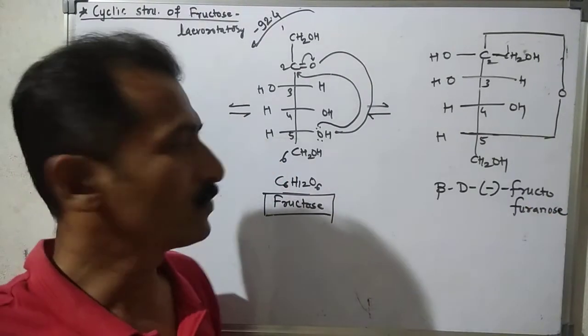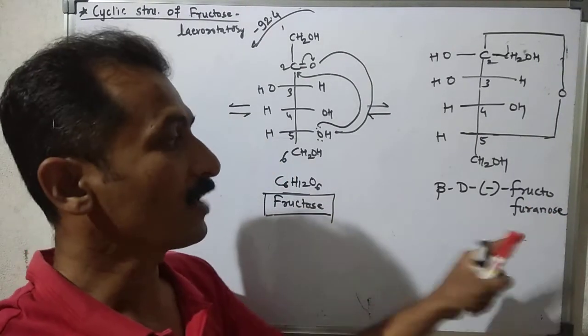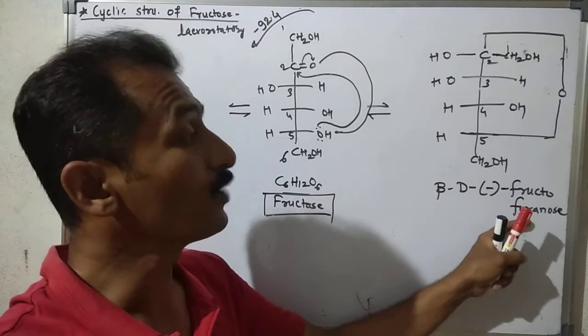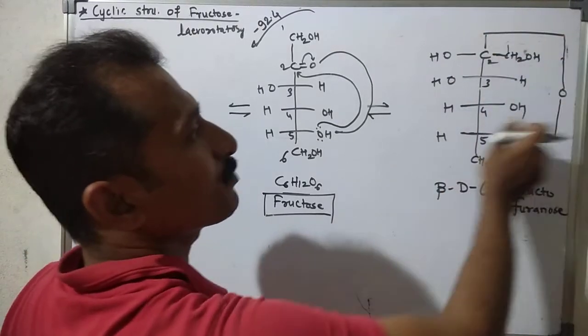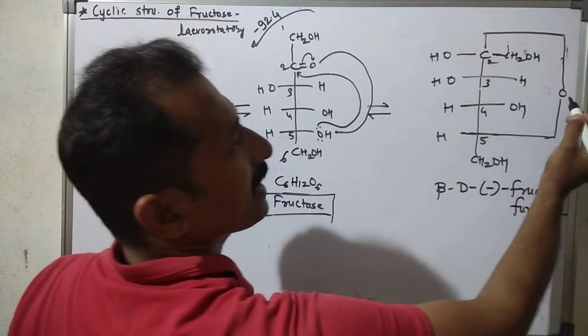The new term here is 'fructofuranose.' The ring formed is a furanose ring — a five-membered ring analogous to the heterocyclic compound furan, just as glucose forms a pyranose ring analogous to pyran.